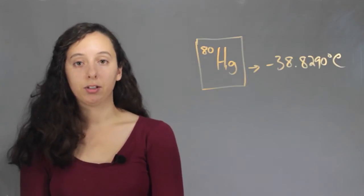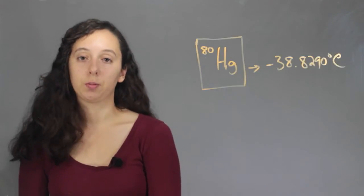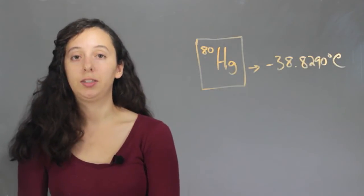So you would have to cool mercury all the way down to negative almost 39 degrees before it froze. So it really is stable as a liquid.